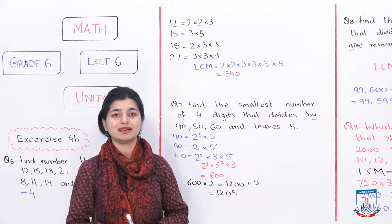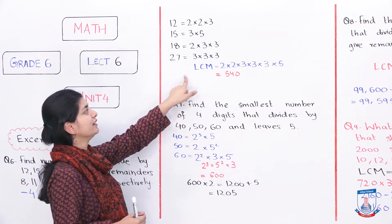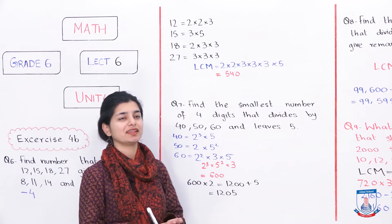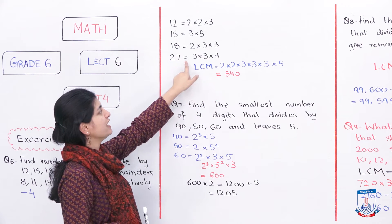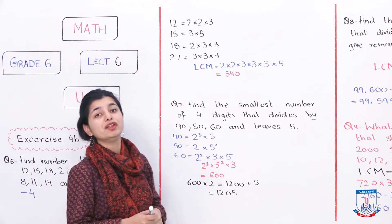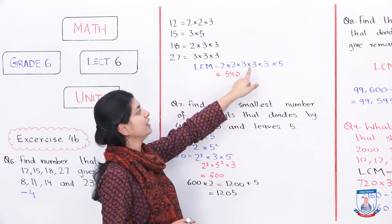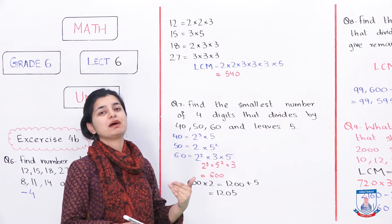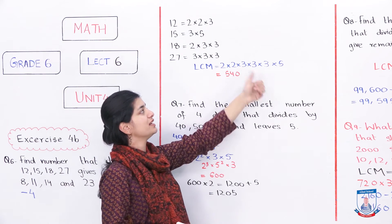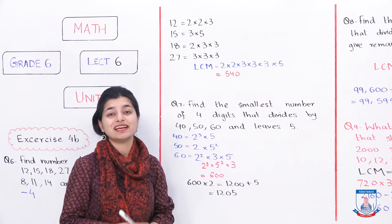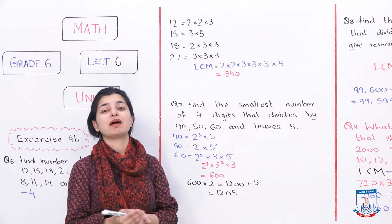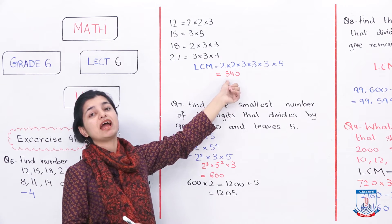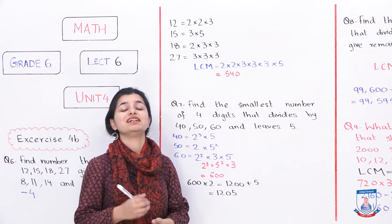Now we will calculate the LCM. To do that, we take the highest power of each prime factor. 3³ is the highest power from 27. 2² is the highest power. And 5 has highest power of 1. When we multiply all of these together — 3³ × 2² × 5 — we get 540. That is our LCM.